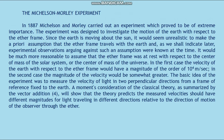The Michelson-Morley Experiment. In 1887, Michelson and Morley carried out an experiment which proved of extreme importance. The experiment was designed to investigate the motion of the Earth with respect to the ether frame. Since the Earth is moving about the sun, it would seem unrealistic to assume that the ether frame travels with the Earth — as experimental observations known at the time were already evidence against such an assumption. It would be much more reasonable to assume that the ether frame was at rest with respect to the center of mass of the solar system or the center of mass of the universe. In the first case, the velocity of the Earth with respect to the ether frame would have a magnitude of the order of 10 to the 4th meters per second.